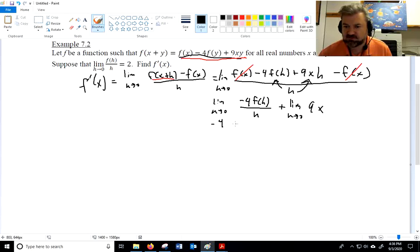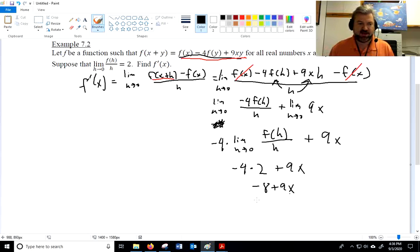So we can pull this negative 4 out. Let me scroll down a little bit here. We can say negative 4, negative 4 times the limit as h goes to 0. We're allowed to pull out a constant of a limit, right? Constant multiple. And then I have the limit as h goes to 0 of 9x is simply 9x because there's no h in it at all. And they told me that the limit as h goes to 0 of f of h over h is 2. So this is just negative 4 times 2 plus 9x. So you get negative 8 plus 9x. And that is the derivative. Pretty interesting problem, huh?